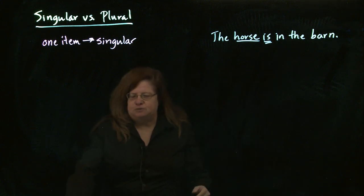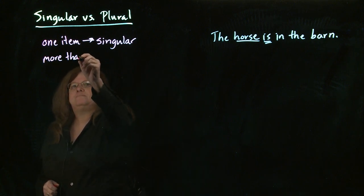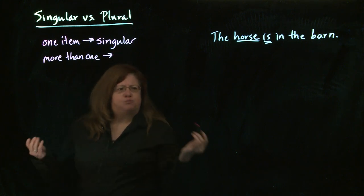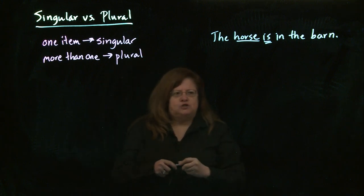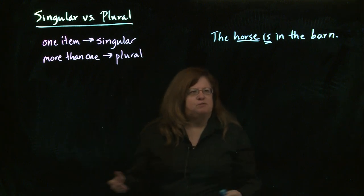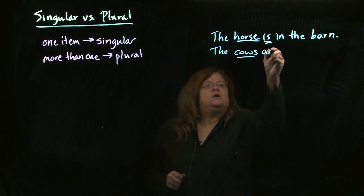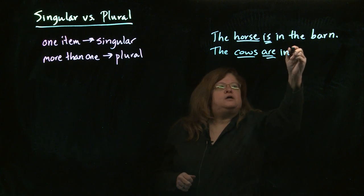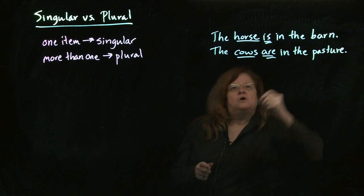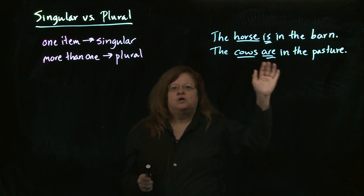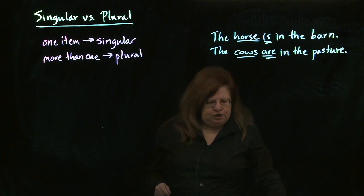It continues to be fairly simple. If we have more than one, that's pretty obviously going to be plural. So I can have 'the cows are in the pasture.' We have the plural noun cows, therefore we use the plural verb are.